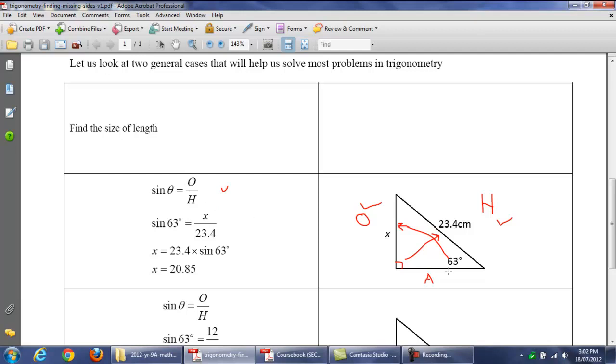Now, it comes to putting the numbers in. See the angle? 63. So, you put sine 63 is equal to O, which stands for X. And H is 23.4.